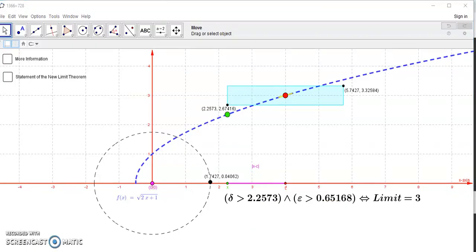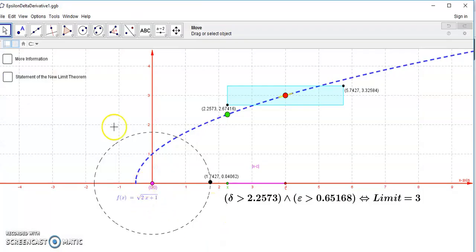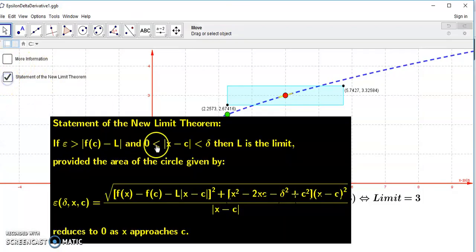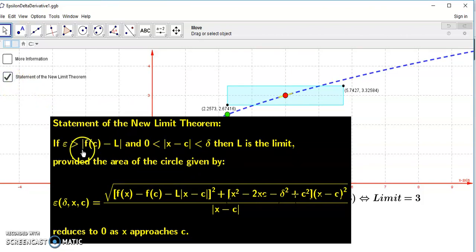With the same function he's using, this 2x root of 2x plus 1, I'm gonna show you that you only need to prove this limit theorem once and it works for any function. What it says basically is that if epsilon is greater than this distance and delta is greater than zero and less than this distance, then L is the limit, provided the area of this circle reduces to 0 as X approaches C.